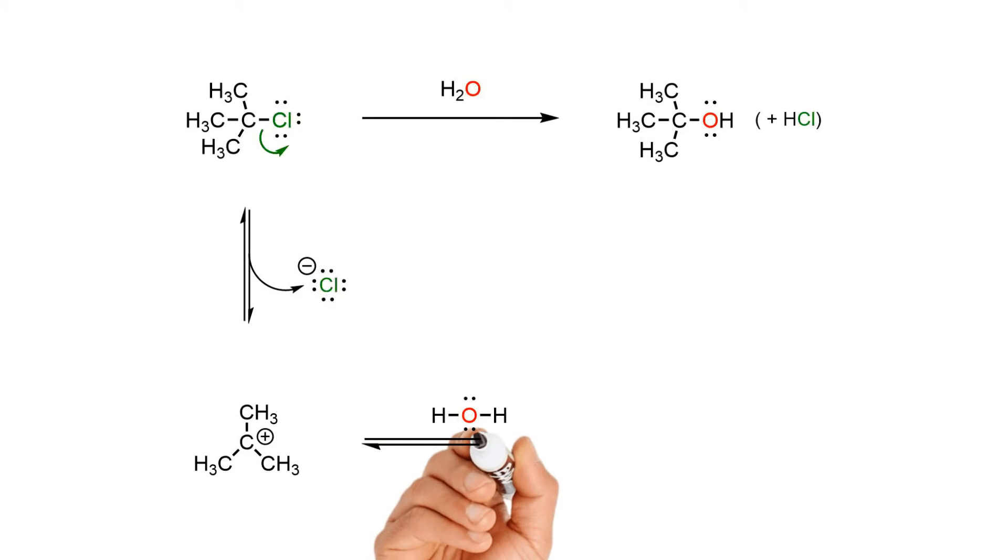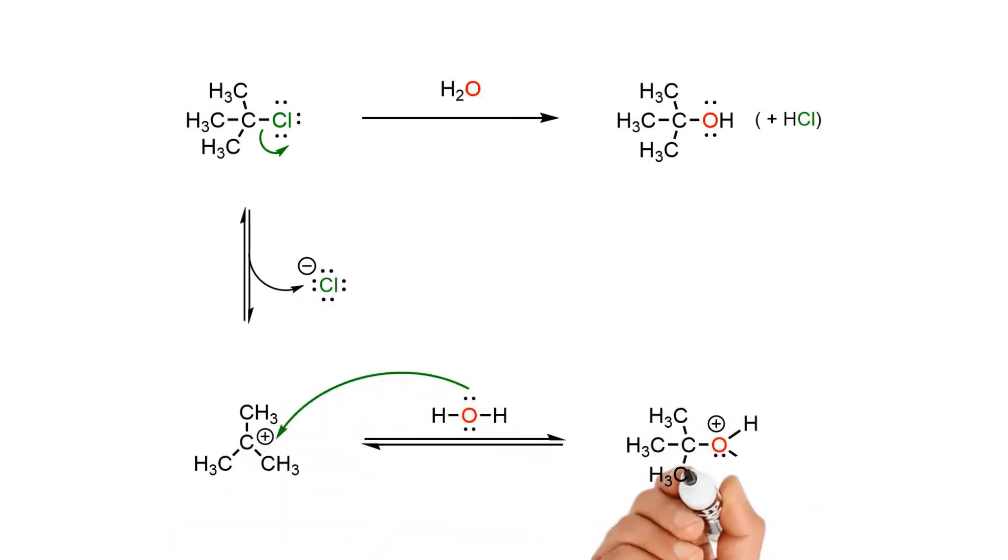In a second, fast step, water attacks the electrophilic carbocation to produce the stable eight-electron protonated alcohol. This step is fast because the tertiary carbocation is flat and not crowded.